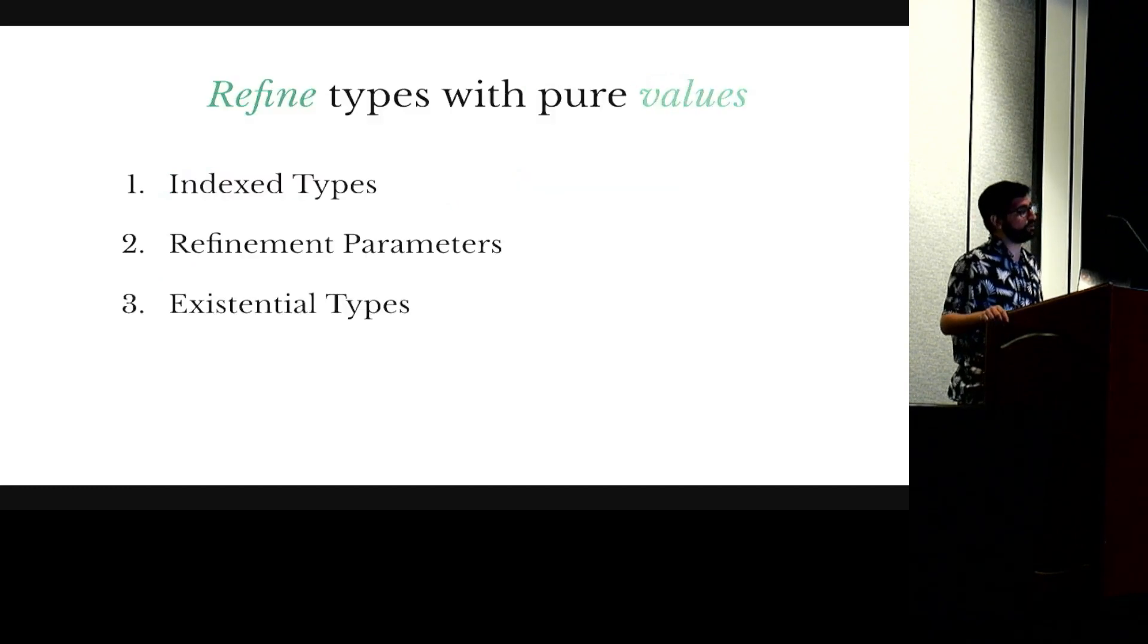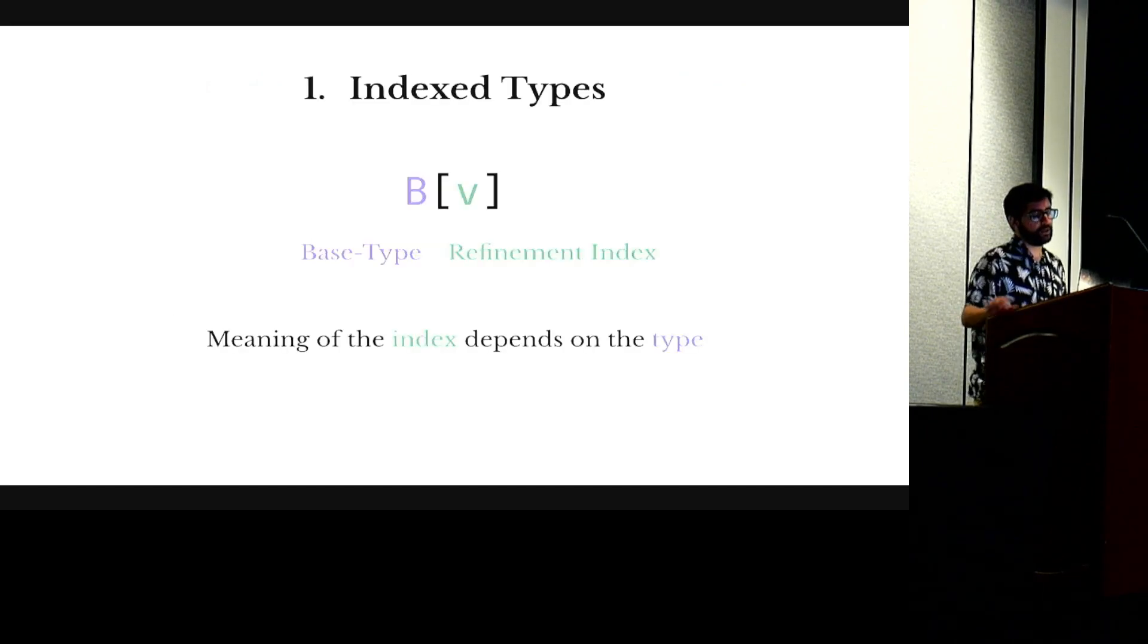In Flux we have three main extensions to the type system. There are index types, refinement parameters, and existential types.